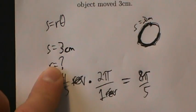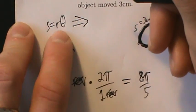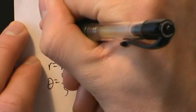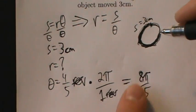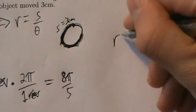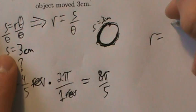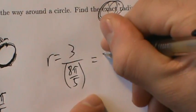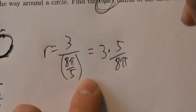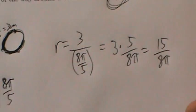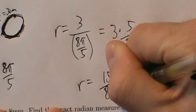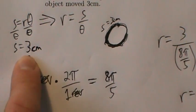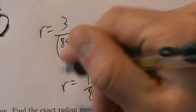Now s = r*theta and we're looking for r, so dividing both sides by theta gives r = s/theta. We know s and we know theta in radians, so we plug in: r = 3 divided by 8*pi/5. Dividing by 8*pi/5 is the same as multiplying by 5/(8*pi), so r = 3 times 5/(8*pi) = 15/(8*pi). We need exact units — s has units of centimeters, so r also has units of centimeters. So r = 15/(8*pi) centimeters.